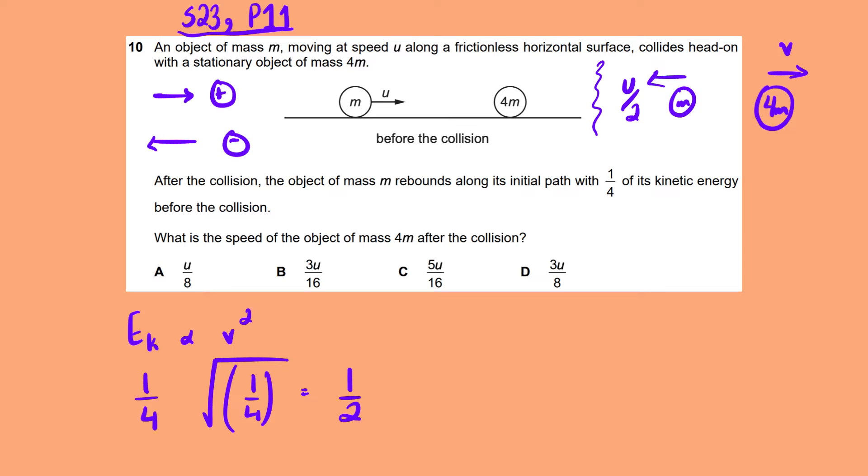So momentum before is mu, and the second object is zero. And then afterwards it's m times negative u by 2 because it's to the left. And we have to find the 4m object's velocity. So mu and this one combined would make it plus mu by 2. This would be equal to 4mv.